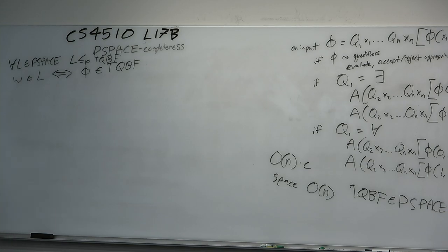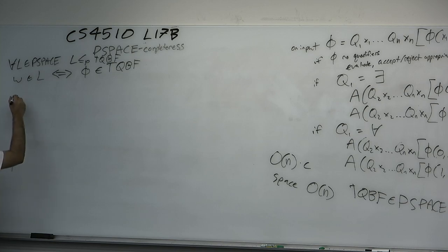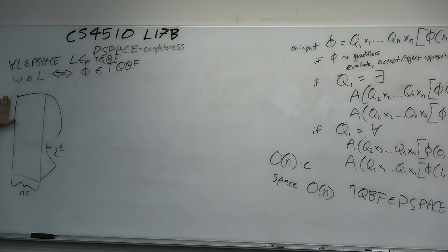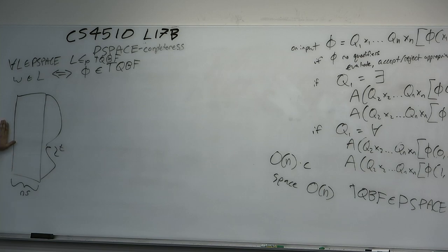Recall with Cook-Levin, we used ands and ors to program a SAT-CNF formula that is satisfiable only if the machine accepted W — the formula simulated the machine. As a first bad idea, suppose M is a polynomial space machine and we tried Cook-Levin again with a tableau. The width would be polynomial space, but it could have exponential time, leading to an exponential-sized table — and a polynomial time reduction can't write down an exponential-sized object.